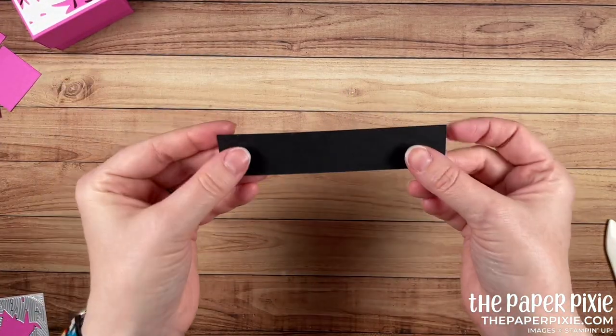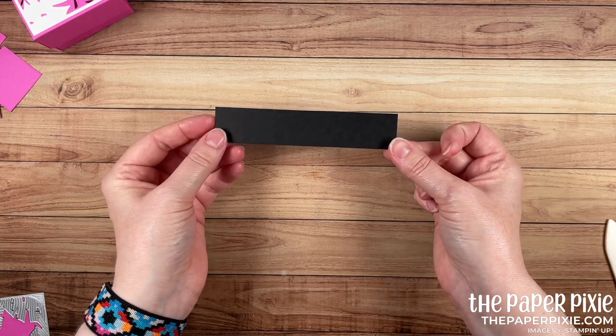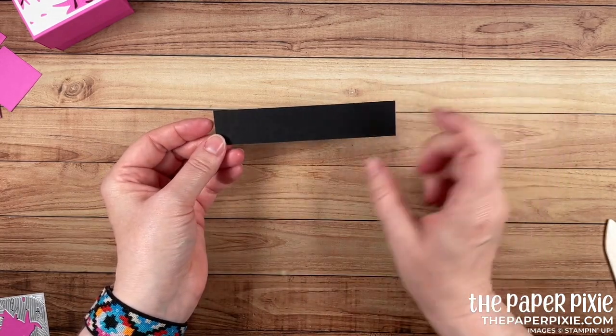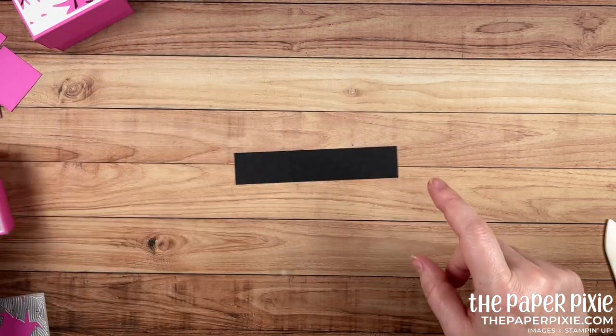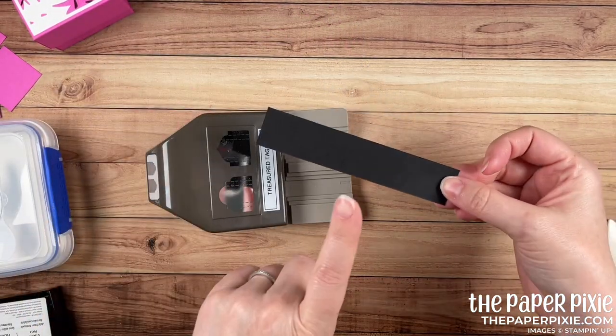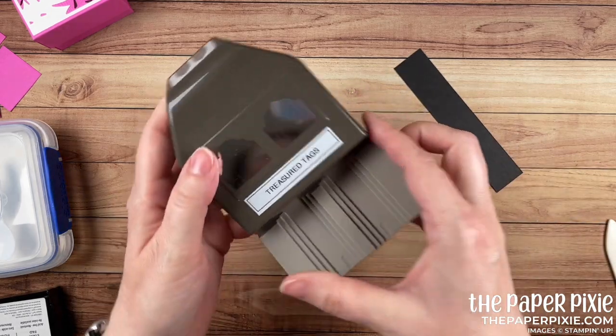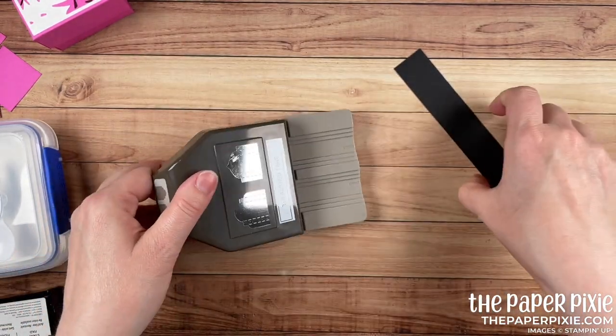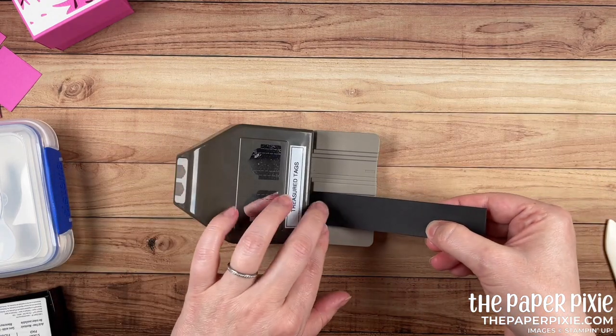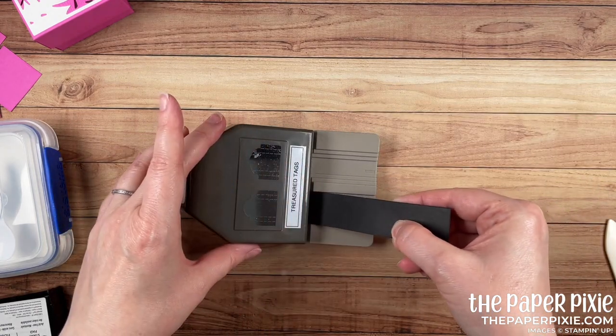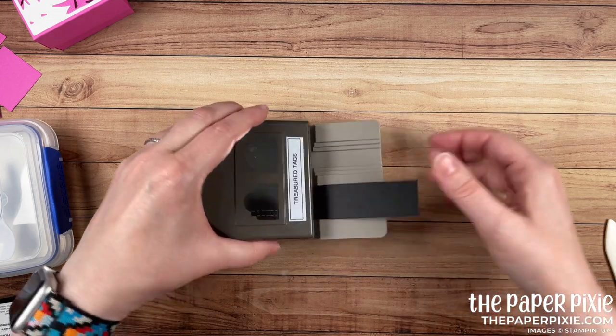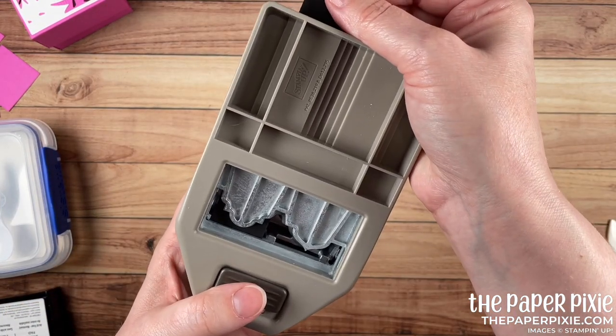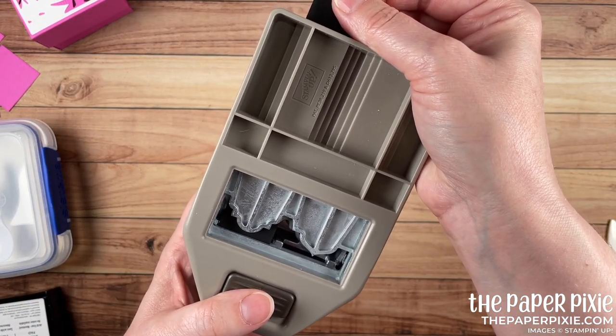I just have a scrap one inch strip of basic black. Just long enough that we can create this sentiment. The first thing I'm going to do is punch this using the treasured tags punch and I love this finished detail here on the left. This is one inch wide so that should fit right into the tray but you do have to put it in at an angle. Then I like to flip this over and make sure that it's still centered on the back.